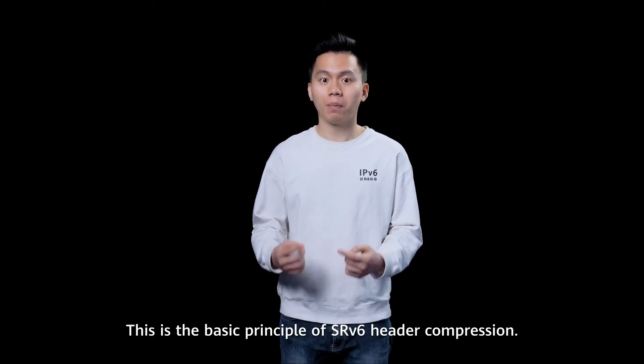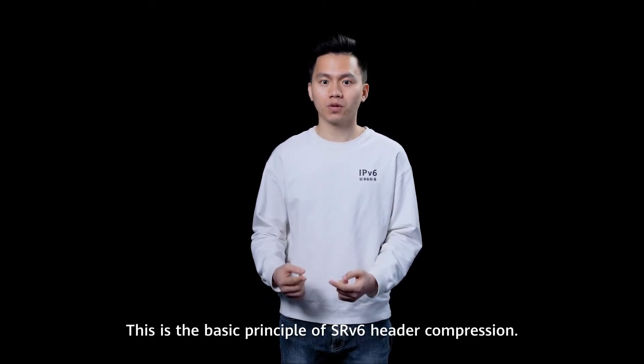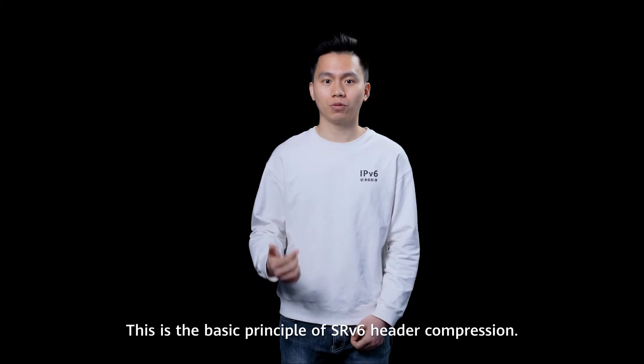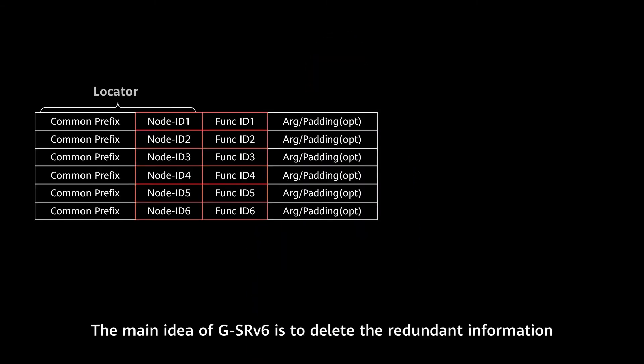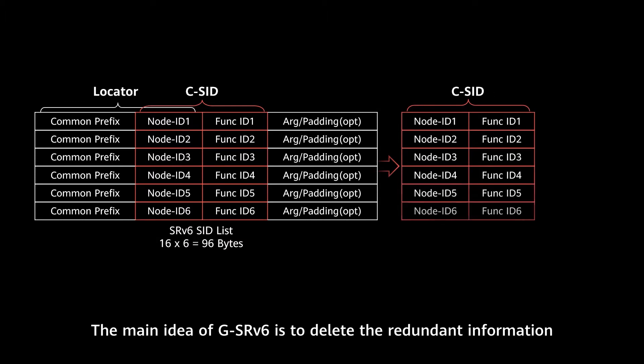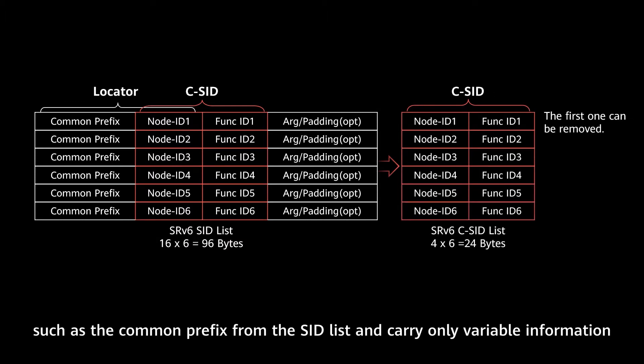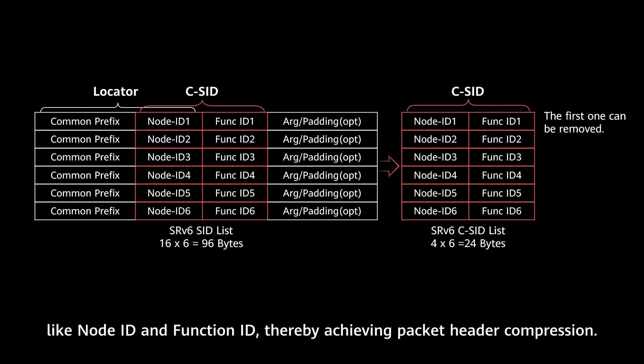In this way, we can avoid carrying multiple redundant pieces of information in the segment list to reduce the overhead of the SRV6 packet. This is the basic principle of SRV6 header compression. The main idea of GSRV6 is to delete the redundant information, such as the common prefix, from the segment list, and carry only the variable information like Node ID and Function ID, thereby achieving packet header compression.